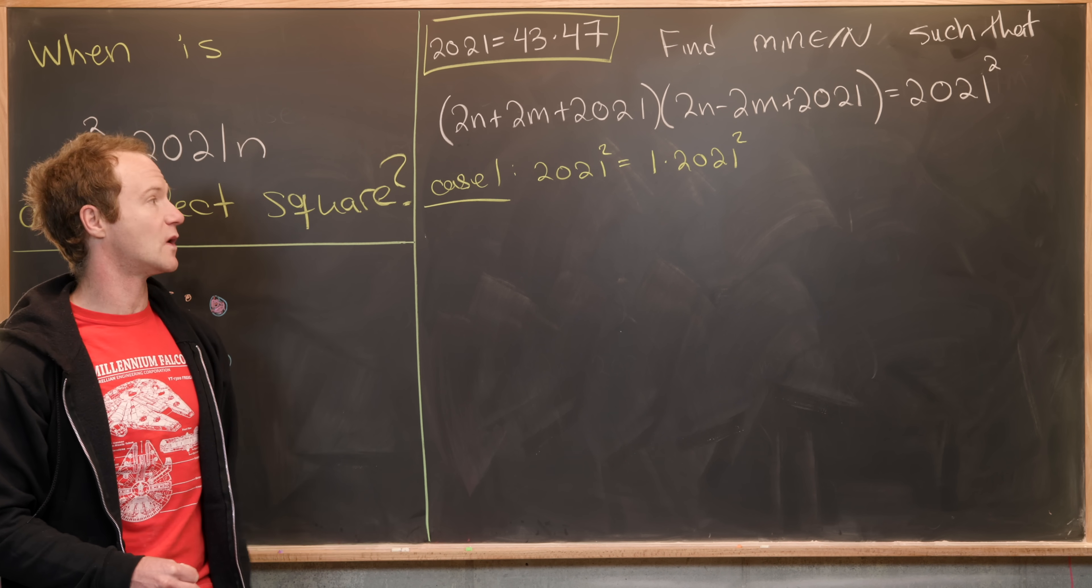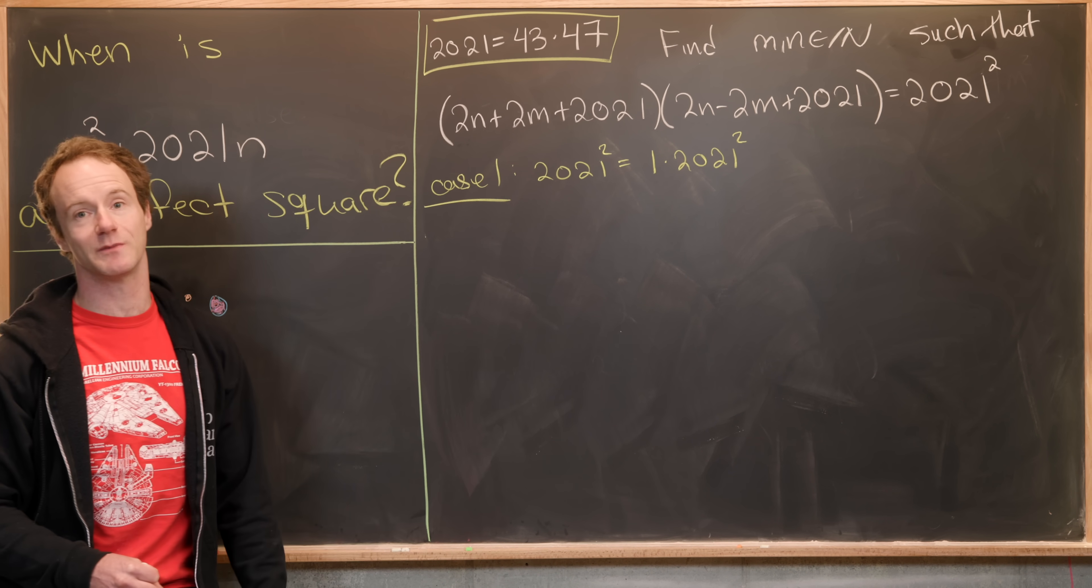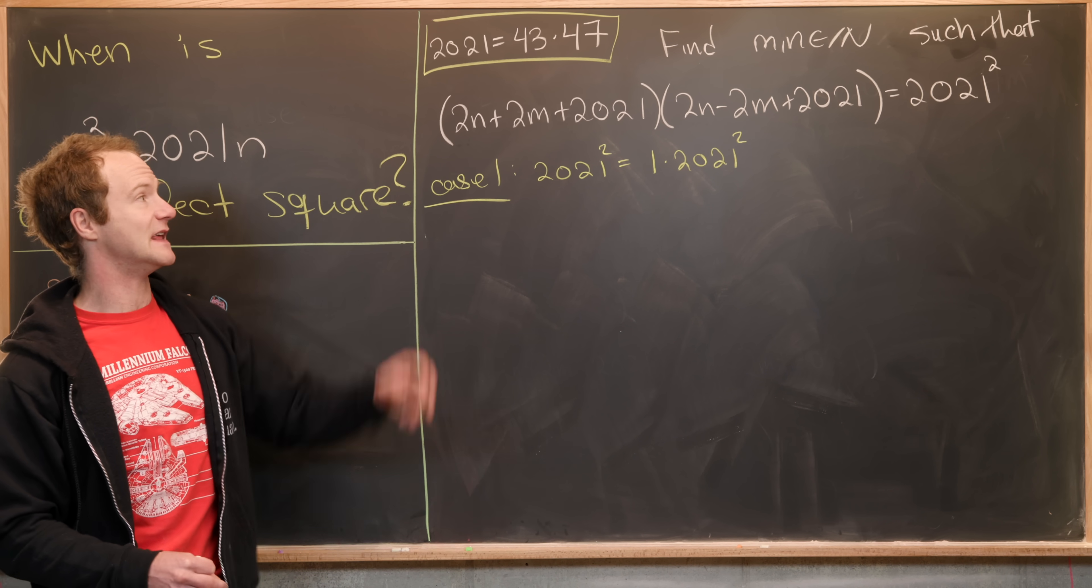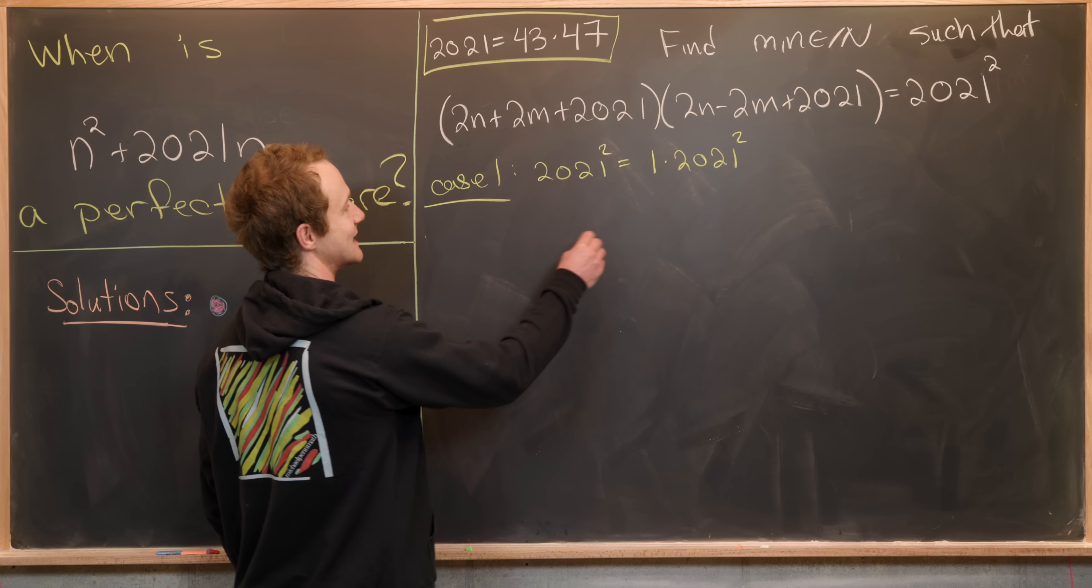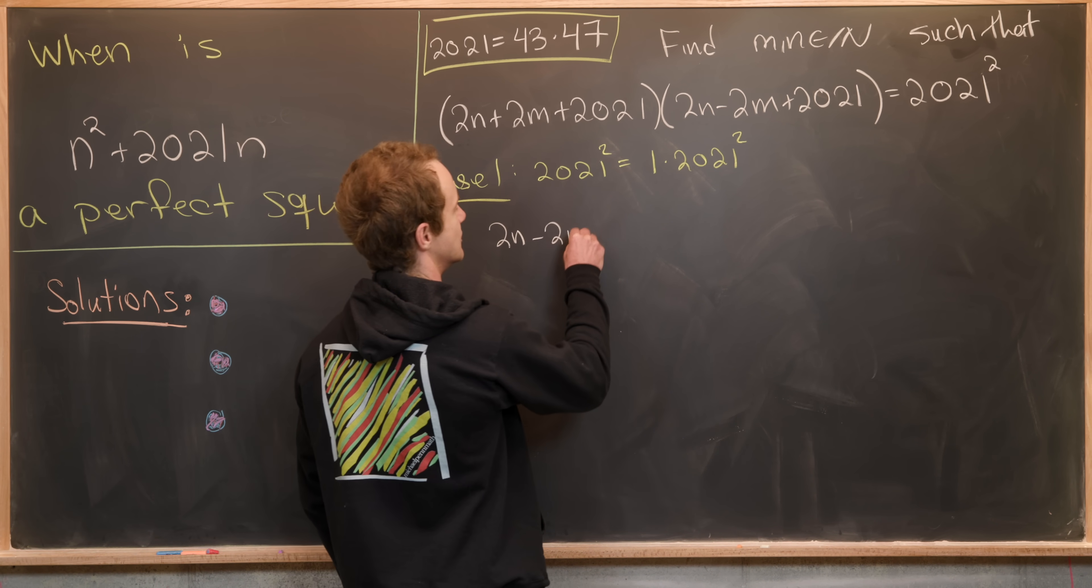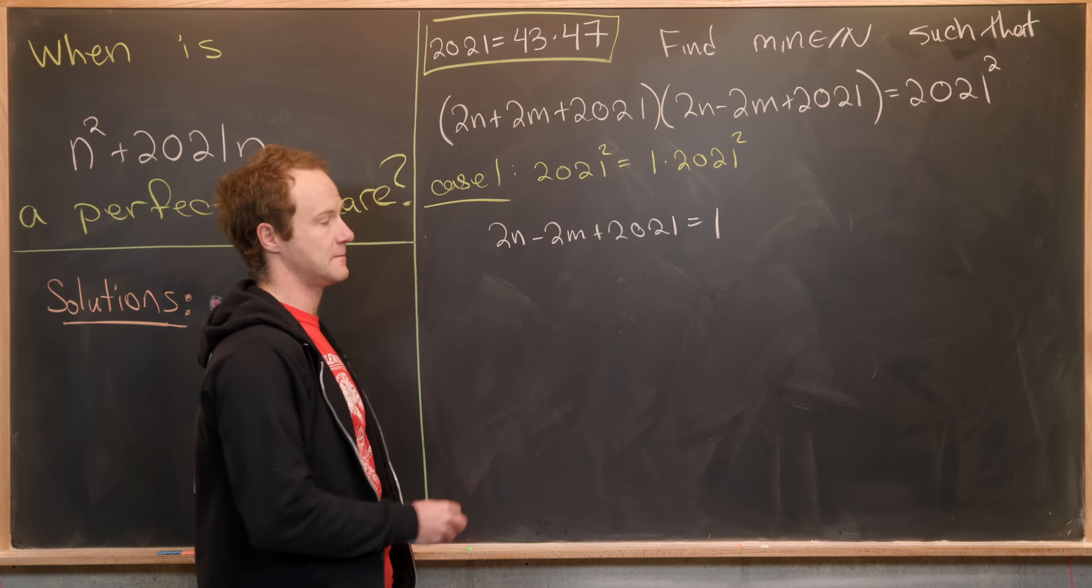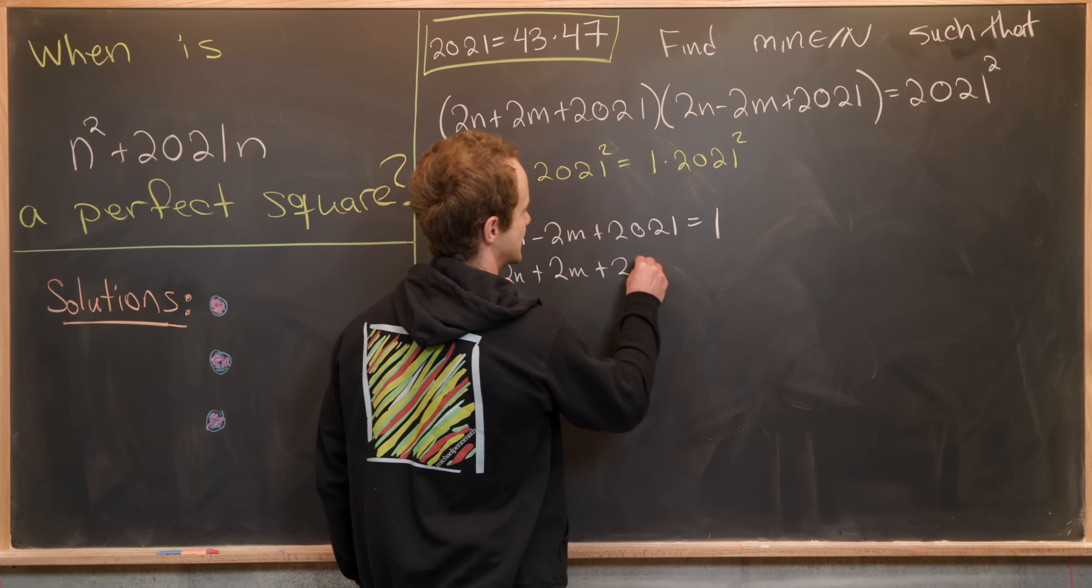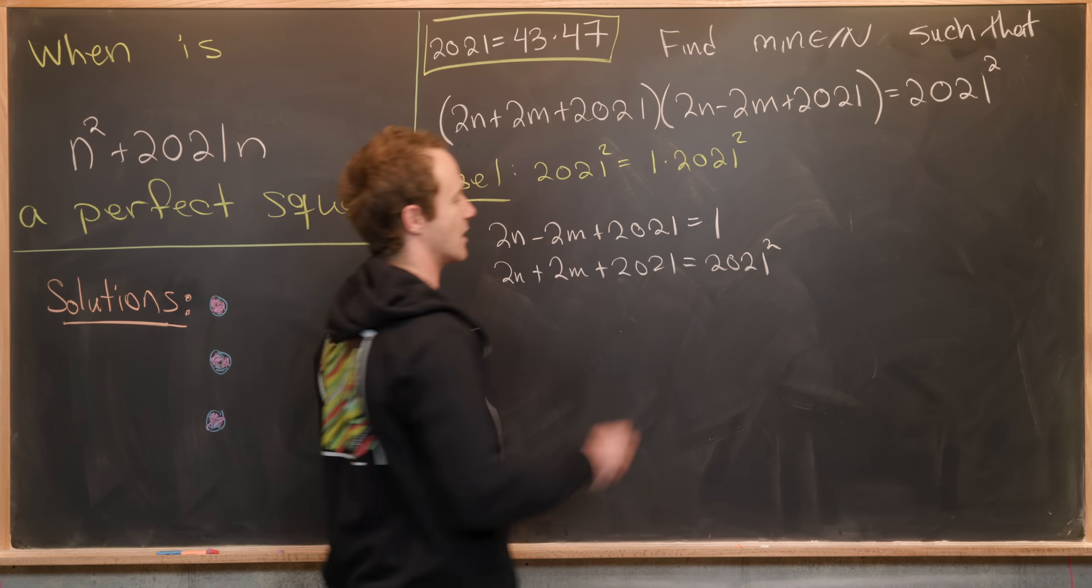You might say, well, which one will be one? Well, it's pretty clear that this right most term is smaller than this left most term, given that m and n are both natural numbers. So that tells us we've got a nice system of equations: 2n + 2m + 2021 = 2021² and 2n - 2m + 2021 = 1.